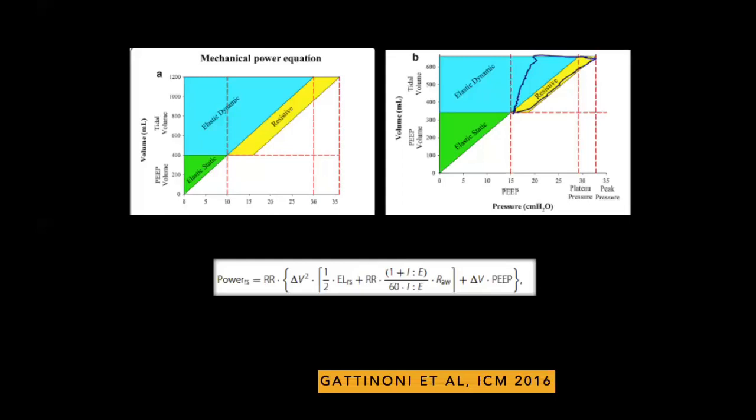There are two important components to this power equation: first, the work — the changes in pressure or volume, i.e., the area under the pressure-volume curve — and second, the rate at which that occurs, which is essentially the respiratory rate we dial in to ventilate patients. Respiratory rate forms part of this power equation and is an important contributor to ventilator-induced lung injury.